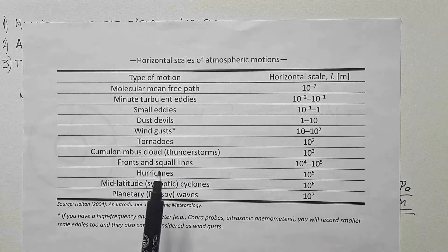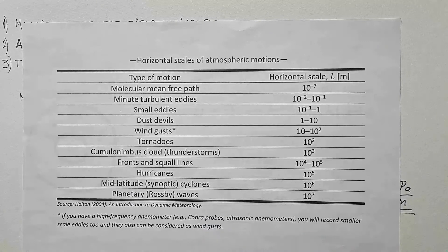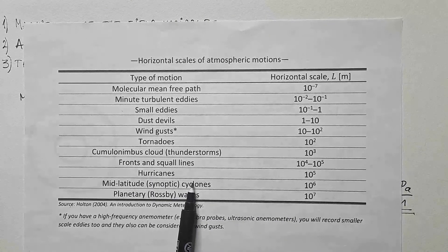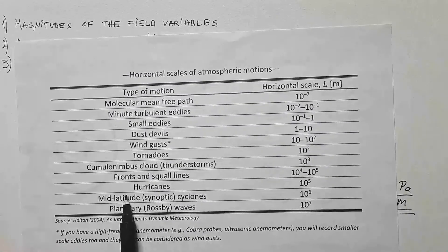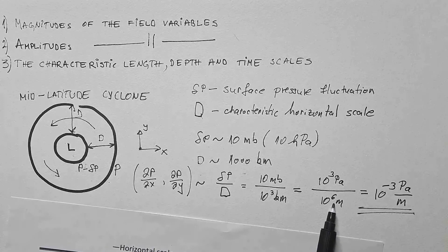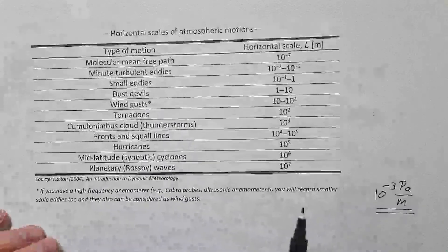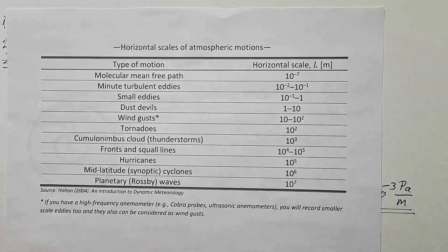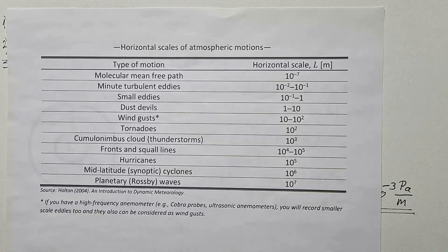lines of thunderstorm clouds and fronts, hurricanes, mid-latitude cyclones, and you can see, actually, that I use the same 10 to the power of 6 meters, or 1000 kilometers, in my analysis, and the largest phenomena on our atmosphere in terms of weather system, planetary Rossby waves.